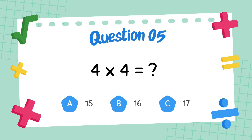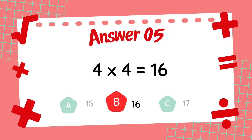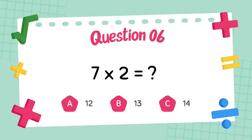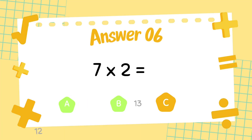What is 4 multiply 4? The answer is 16. What is 7 multiply 2? The answer is 14.